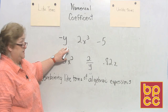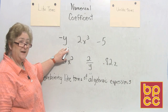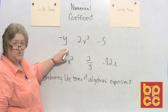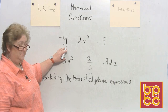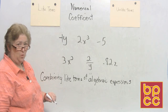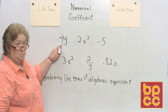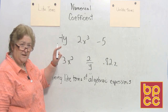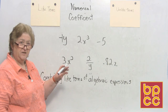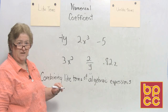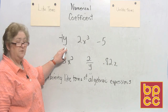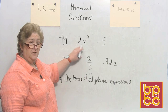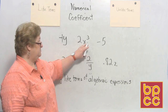Negative y is a term. By the way, if you don't see a number in front of the variable, that number is going to be a 1 — a positive or a negative 1. That missing number is referred to as the numerical coefficient. Anytime you don't see a number in front of a variable, we assume it is a positive or negative 1 based on the sign in front of it. So negative y is a term — negative 1y. The term 2x cubed has coefficient 2, variable x, and exponent 3.